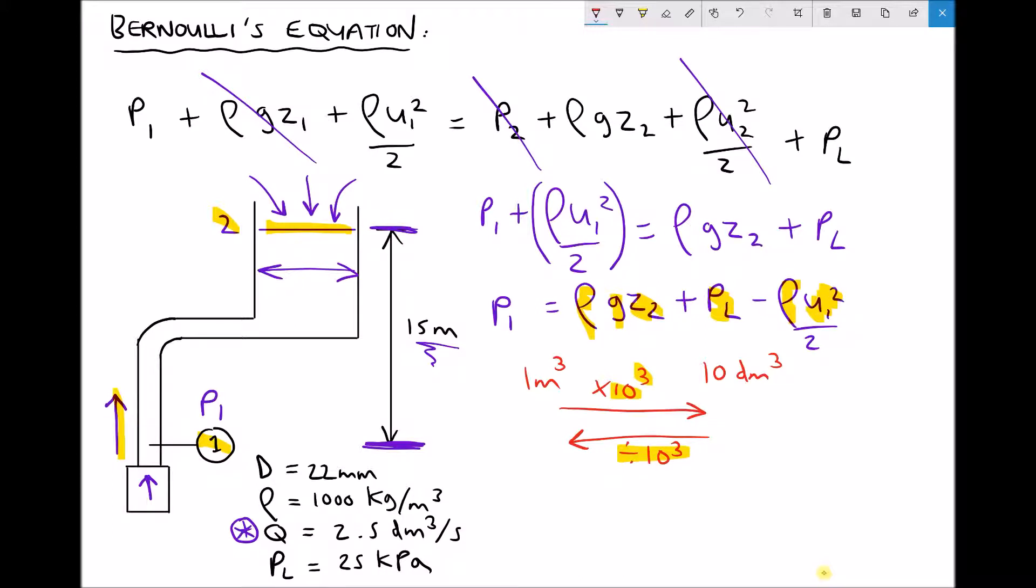So if we have 2.5 decimetres cubed per second, and we want to convert that into metres cubed per second, then we need to divide by 10 to the 3, or 1000, which gives us 0.0025 metres cubed per second. If you prefer just to remember the conversion factor, then you divide by 1000 to get from decimetres cubed per second to metres cubed per second. Let's add that value in metres cubed per second to our list of variables, and then we'll calculate our velocity.